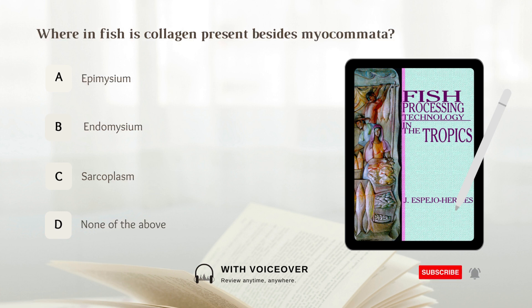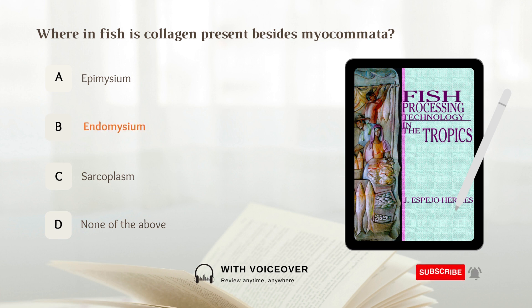Where in fish is collagen present besides myokomata? A. Epimysium, B. Endomysium, C. Cytoplasm, D. None of the above. Answer: B. Endomysium. Collagen besides myokomata is also present in endomysium.